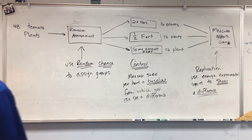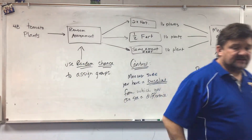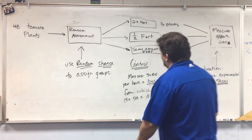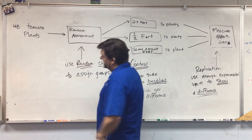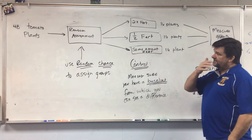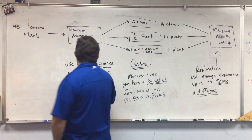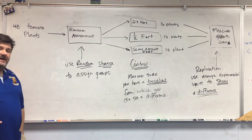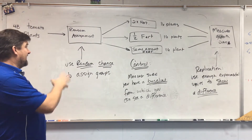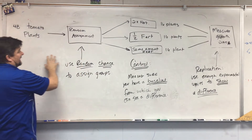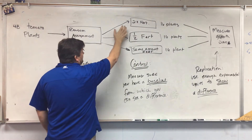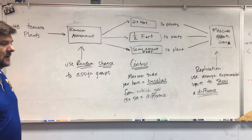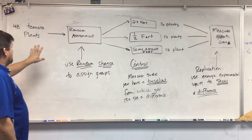We're going to do random assignment. We're talking about random design — we've got 48 tomato plants and we want to test growth according to different levels of fertilizer. The idea behind random chance is that each plant, or each experimental unit, has the same opportunity to be put in each group by random chance, so you have to do it randomly — you can't just choose.